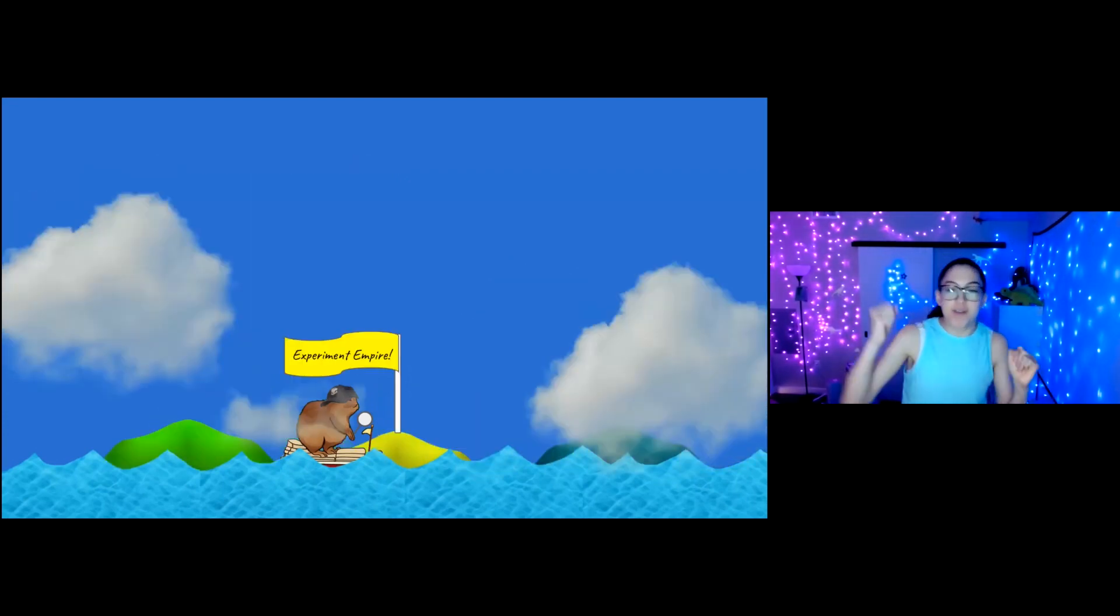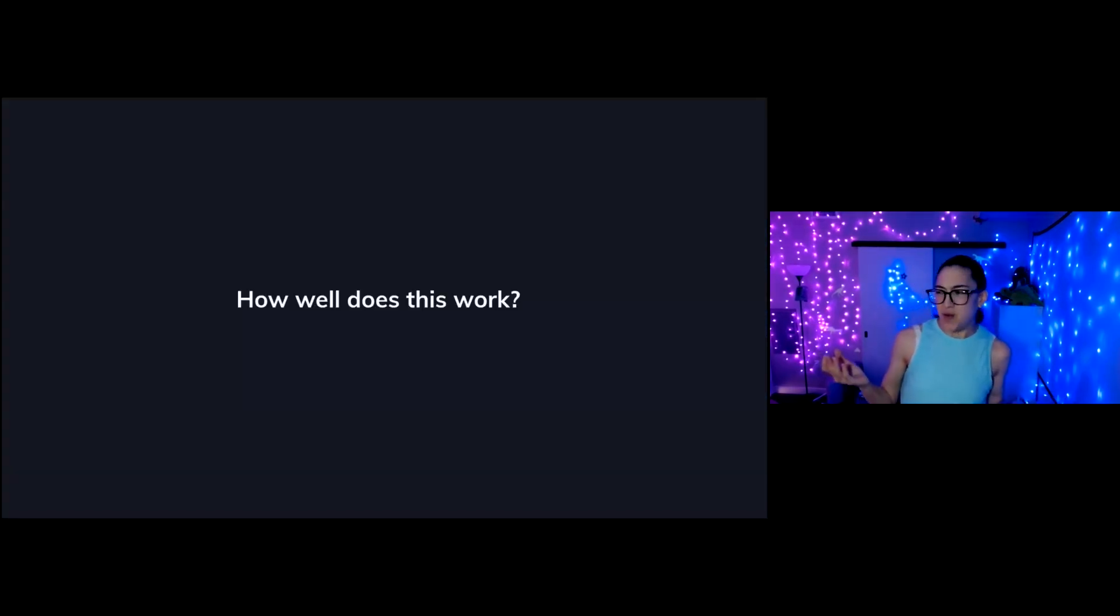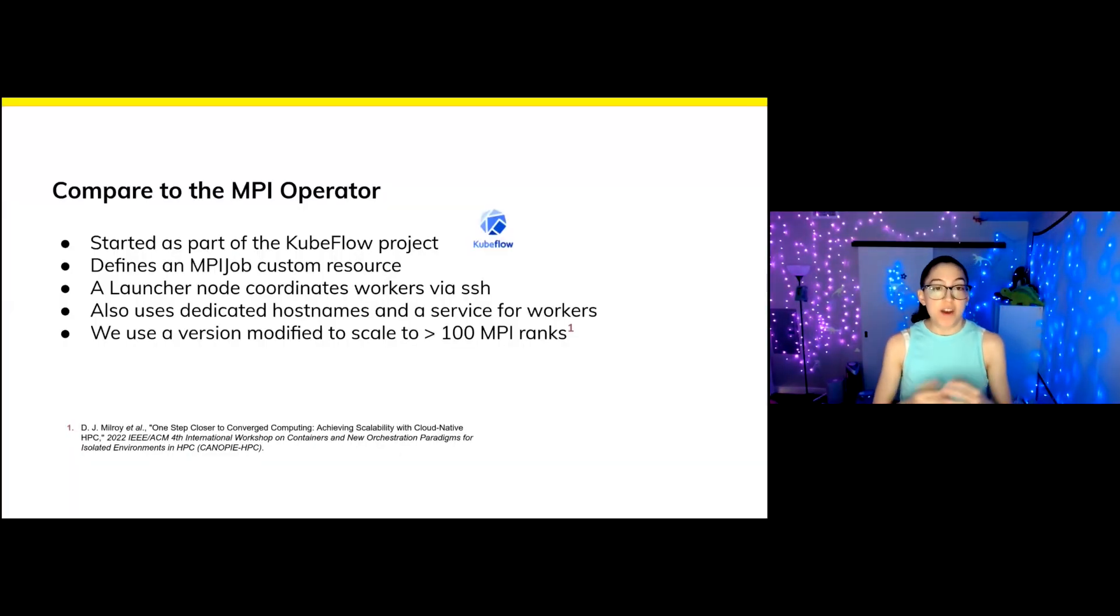The next stop in our journey is going to be Experiment Empire, where we ask empirical questions like, how well does this work? So we decided we wanted to compare it to the MPI operator, which is another operator in the space that is very similar in nature. This started as part of the Kubeflow project, defines an MPI job as its custom resource. It has a slightly different design. It uses a launcher node to coordinate workers via SSH. Like the flux operator, it also uses a dedicated hostname and a service for workers. And we had to use a modified version to scale to over a hundred MPI ranks. Check out the paper right there if you want to learn more about that.